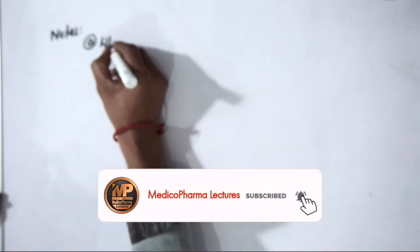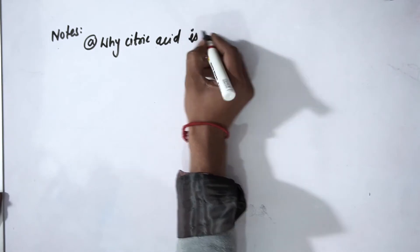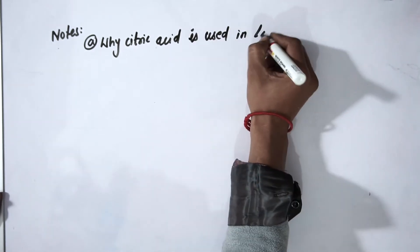Without wasting time, let's discuss why citric acid is used in limit test for iron.